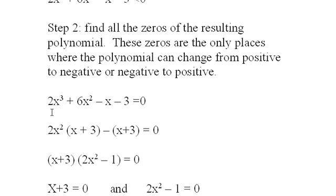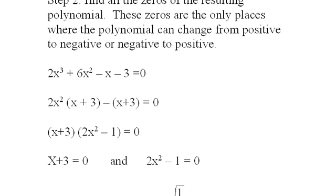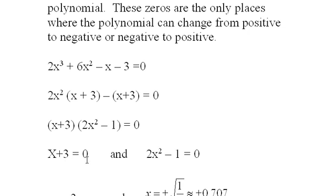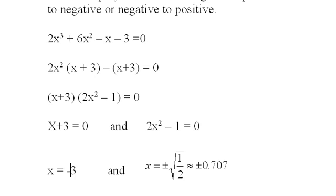It factors into 2x squared — I can group these two. It factors nicely by grouping into (x plus 3)(2x squared minus 1) equals 0. Setting each factor to zero gives x equals negative 3, and x equals plus or minus the square root of one half, which is approximately plus or minus 0.7.